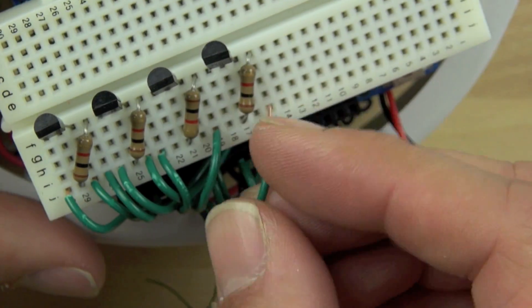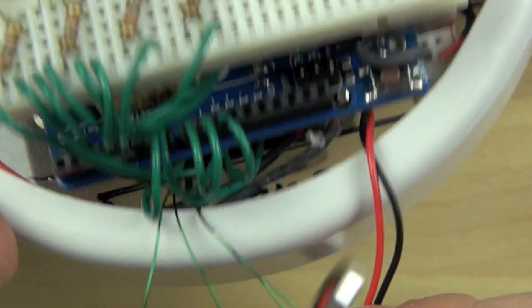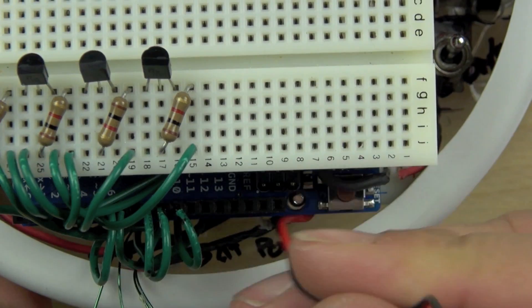We're connecting that to pinouts 4 and 5. Pin 4 goes to the power, pin 5 goes to the shutter.